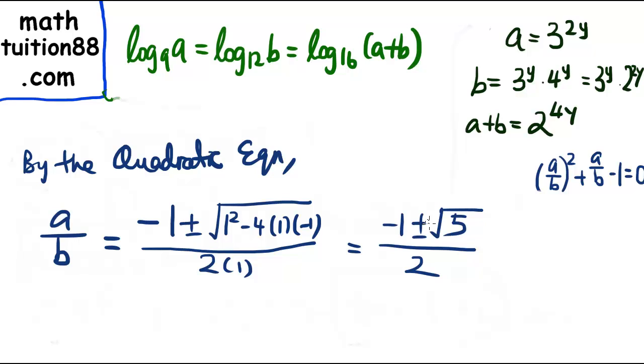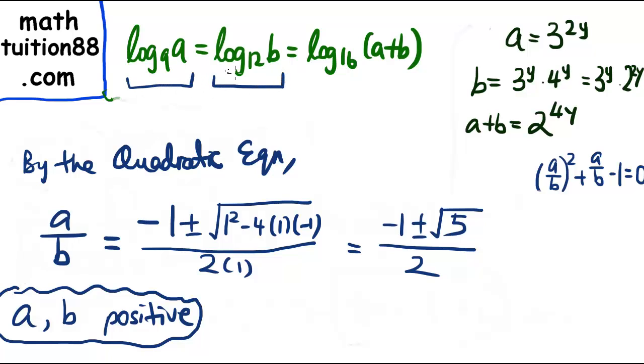So now we know that a and b has to be positive for the logarithm to exist. So we see here, if a is negative, there's no way we can take a log. So we have to reject the negative value down here. And a/b = (-1 + √5)/2. We have obtained the exact value.